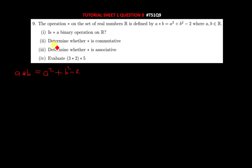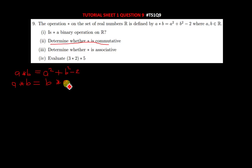For commutativity, a star b should be equal to b star a. The definition of commutative is just the changing of the arrangement of the given inputs. Once you change the arrangement and get the same answer, the operation is commutative. If the answers are not equal after swapping, the operation is not commutative. Let us test this.